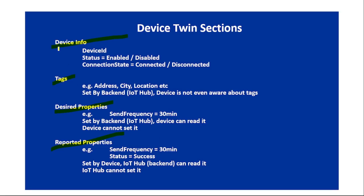Going back to our presentation: device info includes device ID, status, and connection state. Then we have tags — for example, under tags we can set the address or the city where that IoT device has been installed. Then there are desired properties and reported properties.